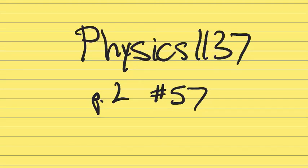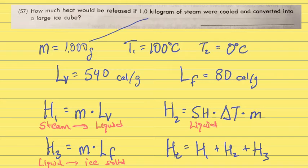Let's talk about problem 57 on page L of physics 1137, the fifth piece. The problem says how much heat would be released if one kilogram of steam were cooled and converted into a large ice cube.